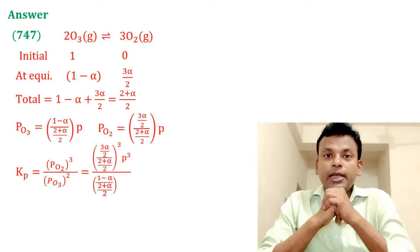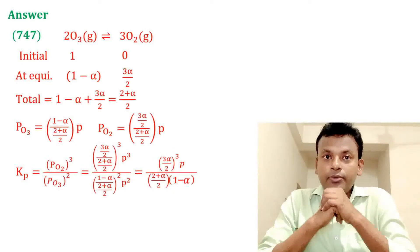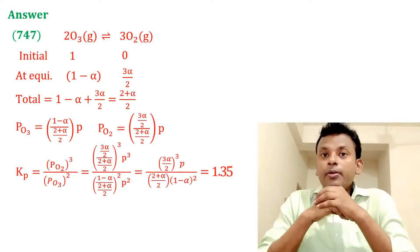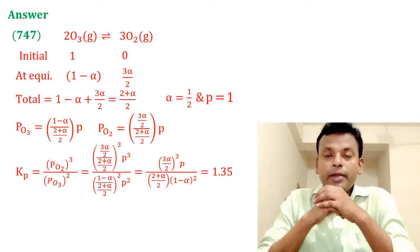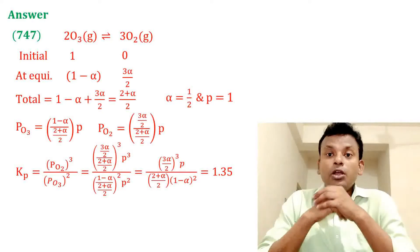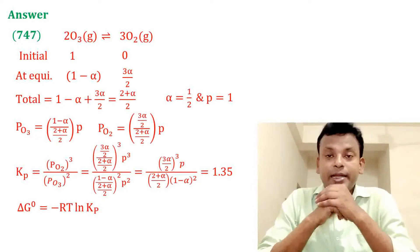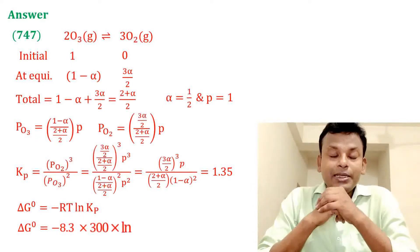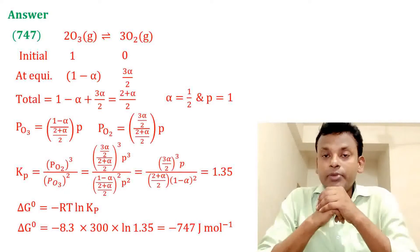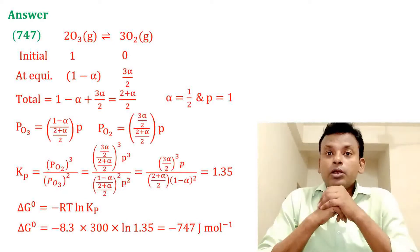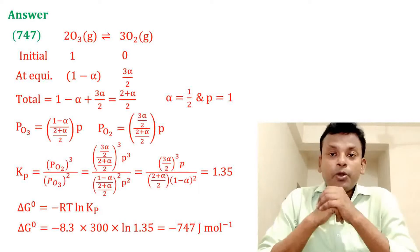Putting in the values with α = 0.5 and P = 1, Kp equals 1.35. We know that ΔG° equals −RT·ln(Kp). Putting in all values, ΔG° equals −747 joules per mole, so the answer is 747.